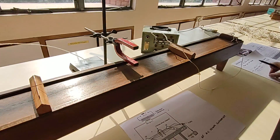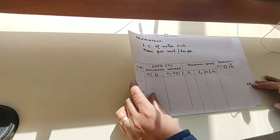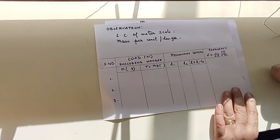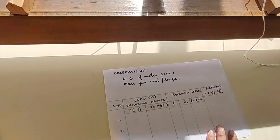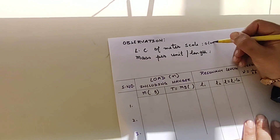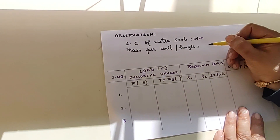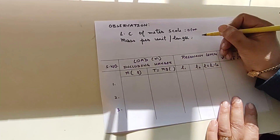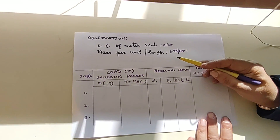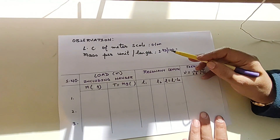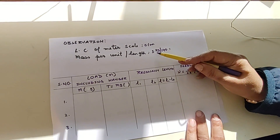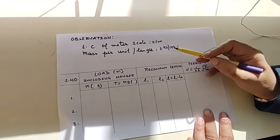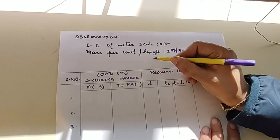Now for the observation table: the least count of the meter scale is 0.1 centimeter. The mass per unit length of the wire is needed and will be given to you. For this wire in our lab, the mass is 2.90 grams and the length of the wire is 140 centimeters.